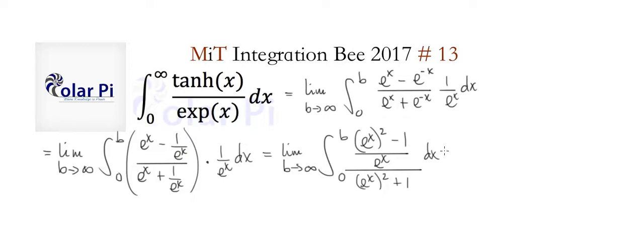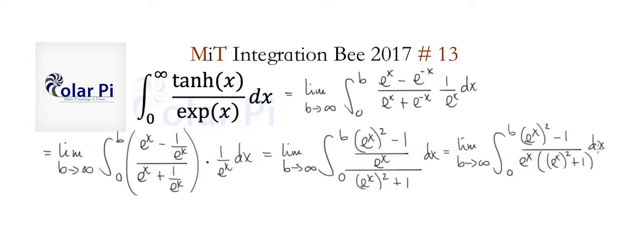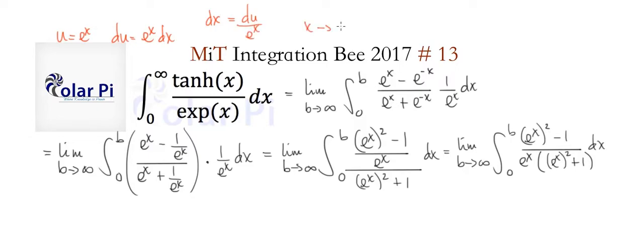Now we're going to make a substitution, but let's first clean this up and rewrite it. It's easy to see that this form here is the same as this one. So let's make the substitution u = e^x, so du = e^x dx, which means dx = du over e^x.